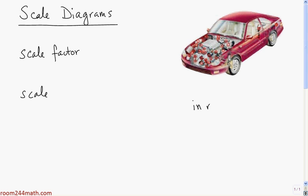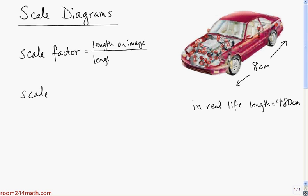In real life, let's say the car's length is 480 centimeters. On the actual diagram, on my computer, it looks about 8 centimeters long. To calculate the scale factor, you simply take the length on the image and divide it by the length in real life.